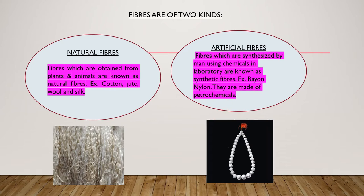Now we will discuss about the polymer. This one bead in the necklace is known as a monomer, and the garland with the beads is known as a polymer. Thus, a polymer is an aggregated structure consisting of numerous small simple molecules of one or more kind. Cellulose is a natural polymer occurring in the wall of plant cells. Its simple unit is glucose.